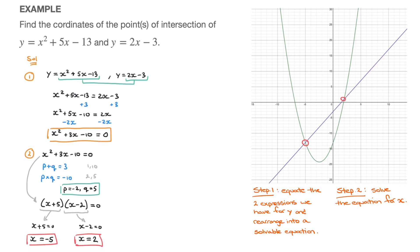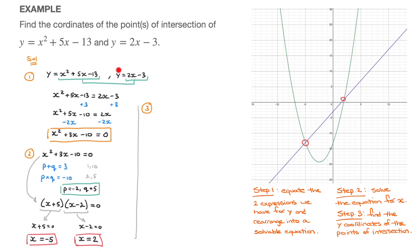We've finished step 2, finding the x-coordinates of the points of intersection. Moving on to step 3, we need to find the y-coordinates. We can use either of the two equations given. Looking at both options, I would definitely suggest using the equation of the line to calculate the y-coordinates.